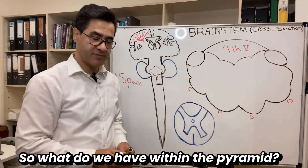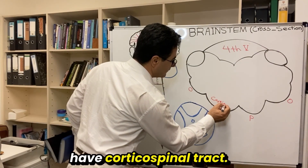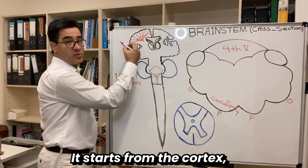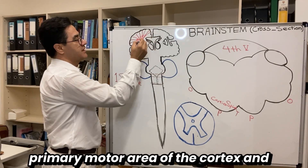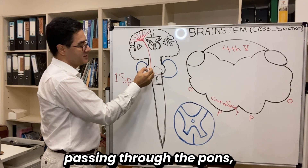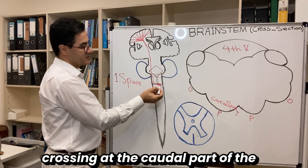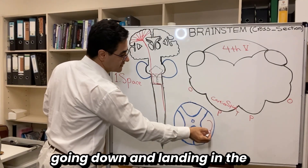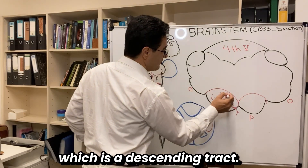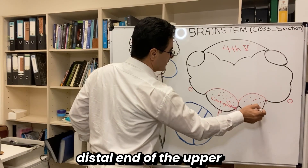Within the pyramid we have the corticospinal tract. As its name suggests — cortico — it starts from the cortex, specifically the primary motor area of the cortex. The axon comes down through the internal capsule, passing through the midbrain, through the pons, through the medulla oblongata, and crossing — most fibers cross at the caudal part of the closed medulla — then going down and landing in the lateral white column. The corticospinal tract is a descending motor tract supplying the muscles of the distal end of the upper and lower limbs.